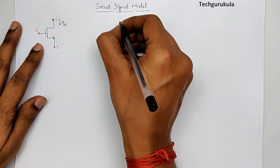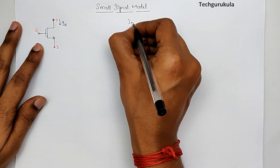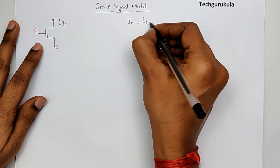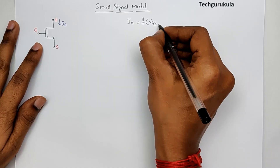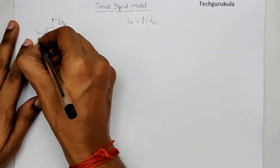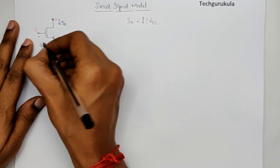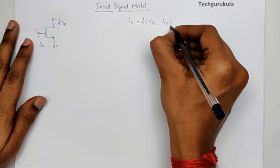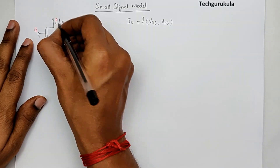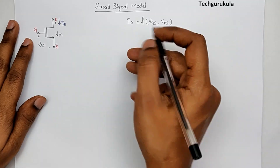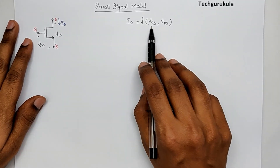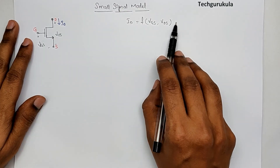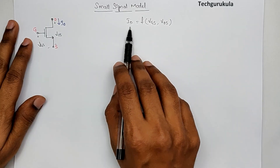To start with, let's say the drain current flowing into the drain is a function of the voltage applied between gate to source, VGS, and it's also a function of VDS, which is the potential between drain to source. Now in order to find the small signal model, let's say we change VGS by a delta VGS and VDS by a delta VDS.